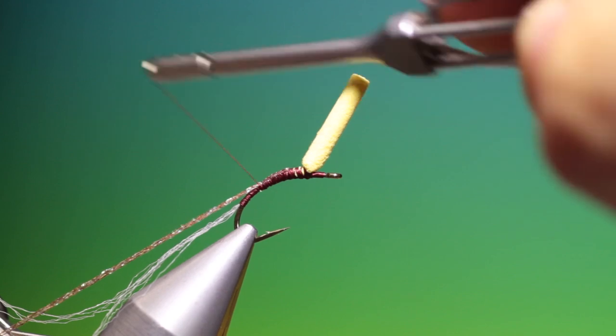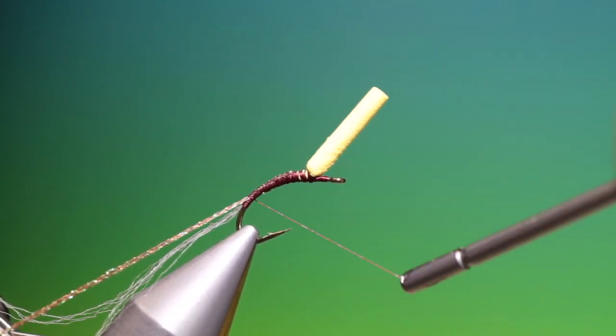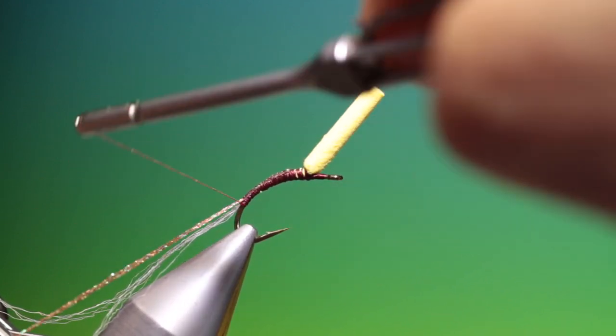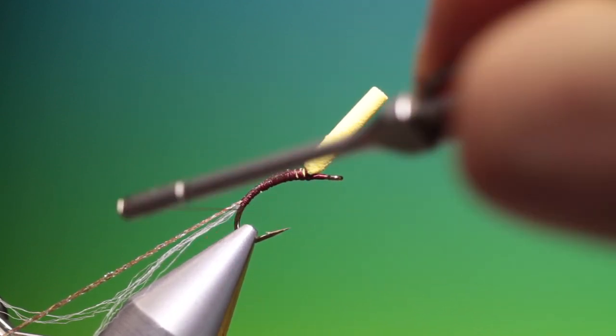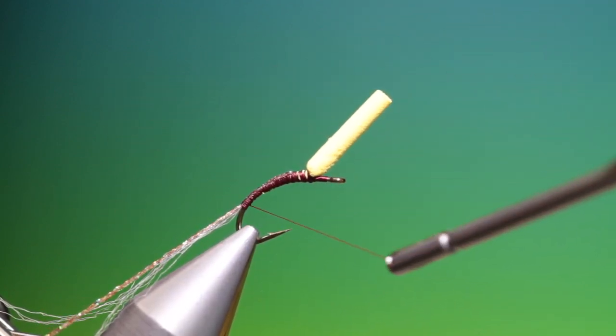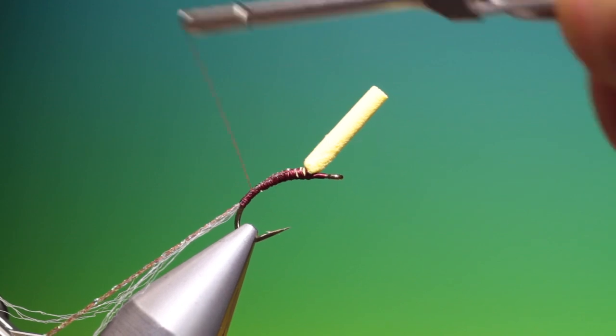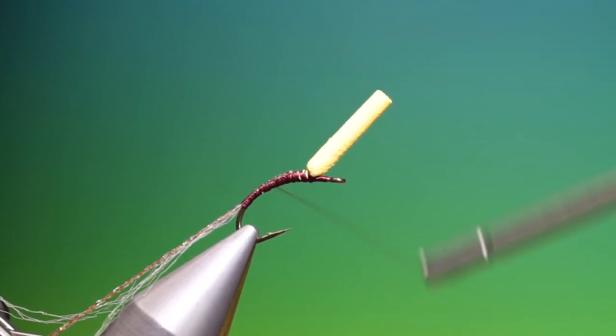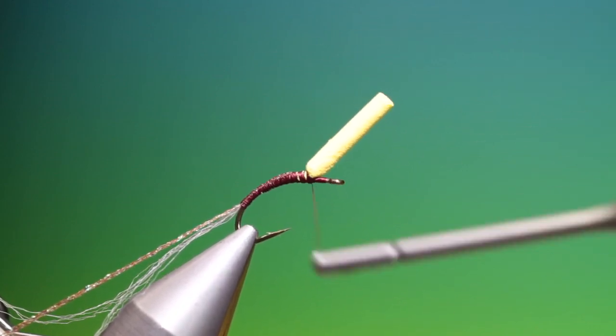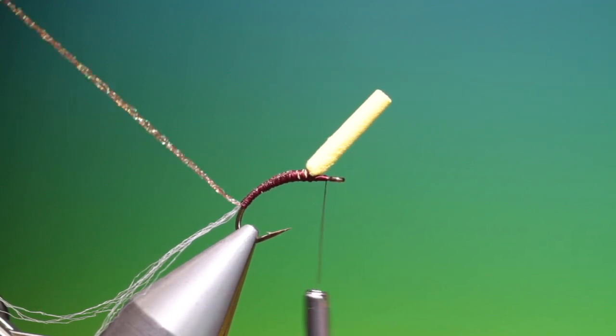And then we can tie this in. All the way down. Right into the parapost material. Then we go back up and then leave our thread there.